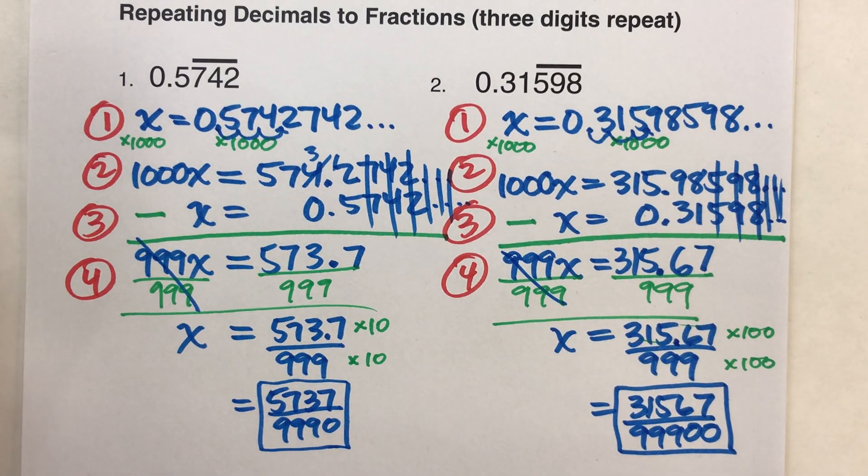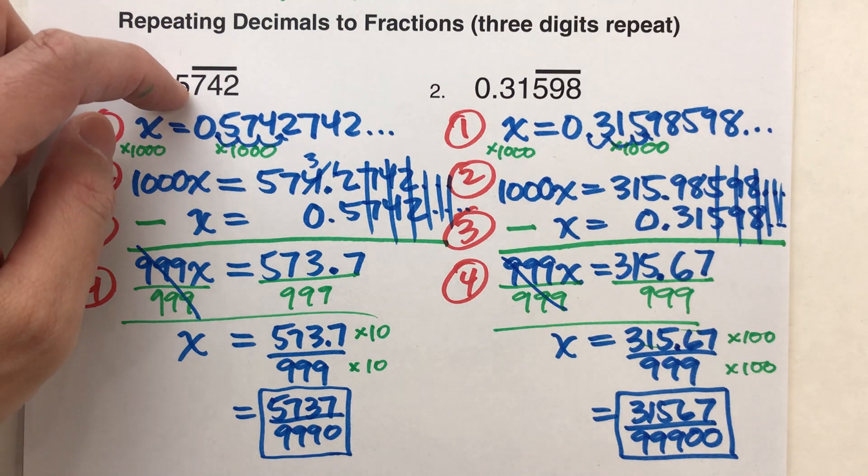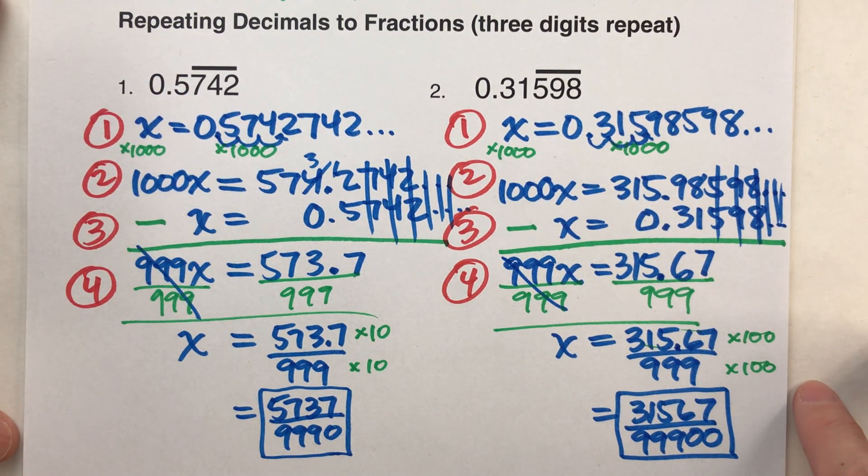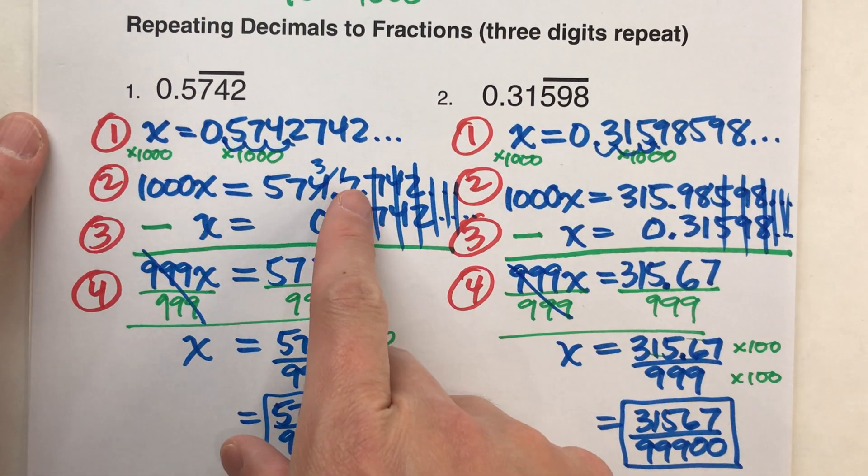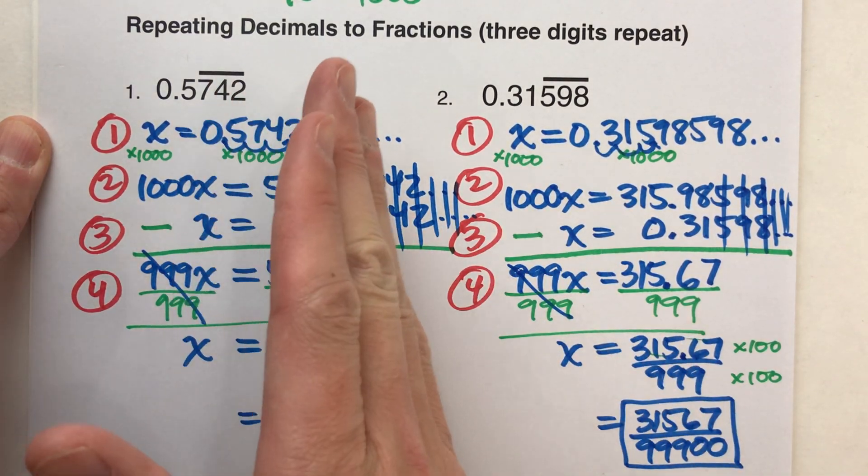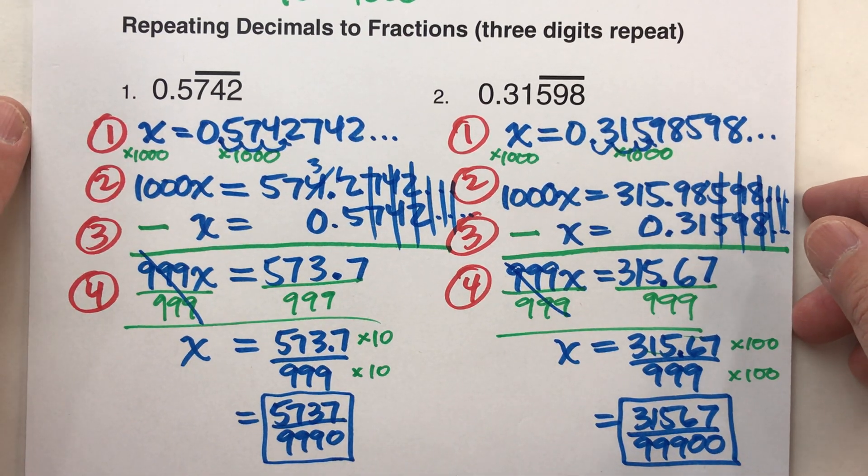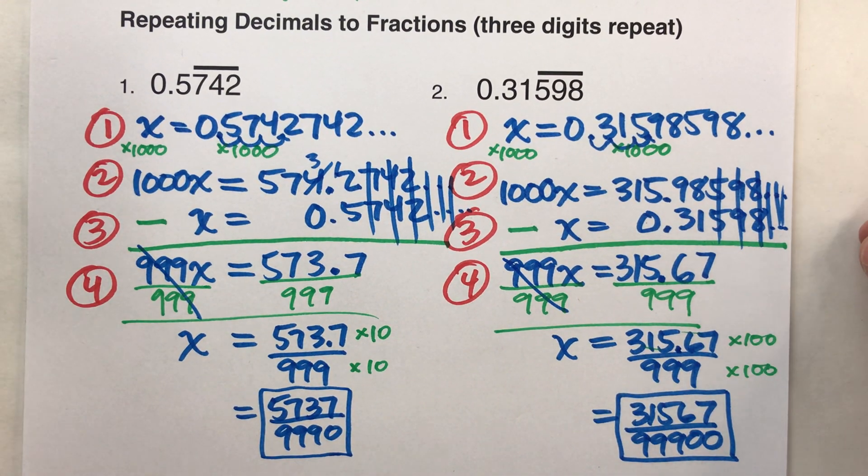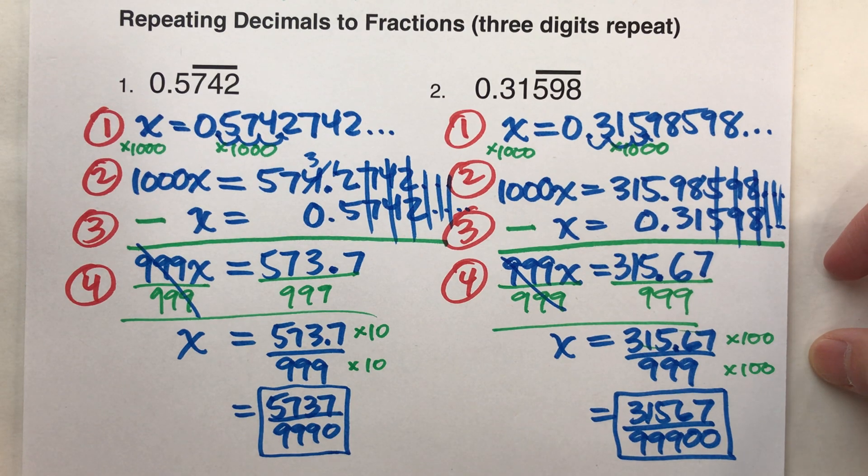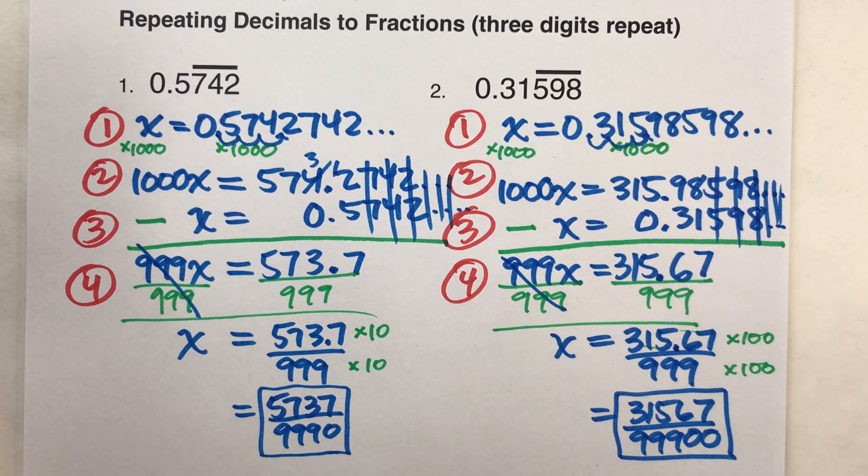Alright? So, that's the process. Now notice, with this many repeating digits, you really have to work carefully and neatly. You have to make sure those digits kind of line up when you write it out, so that way when you subtract them, you're subtracting the right digits from each other. Okay? So, work really carefully when you're doing these.